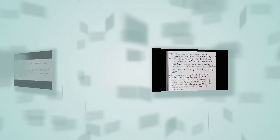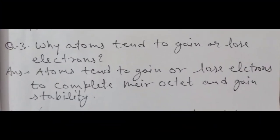Question number 3: Why do atoms tend to gain or lose electrons? Atoms tend to gain or lose electrons to complete their octet and gain stability. Jab unka octet complete ho jaega — yaani outermost mein 8 electrons ho jaenge — to noble gas ka configuration ho jaega, aur is tarike se woh stable hone ke liye octet banane ke liye gain or lose electrons karte hain.